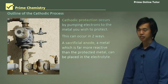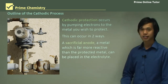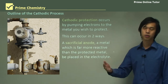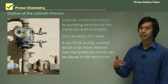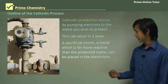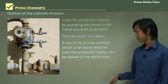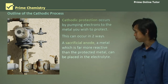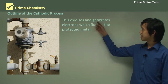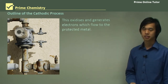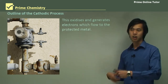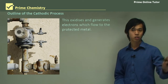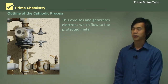We can do this in two ways. One, we can use a sacrificial anode. A sacrificial anode is a metal that's more reactive than the metal you want to protect. So if it's iron, we want to pick something like zinc or magnesium — something more reactive than iron. It will react with the electrolyte in the ocean and oxidize, generating electrons which flow to the protected material. Those electrons force that metal to become a cathode.